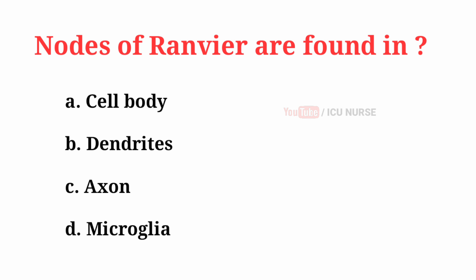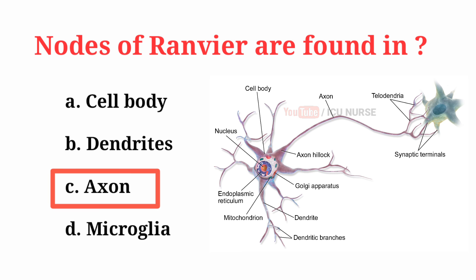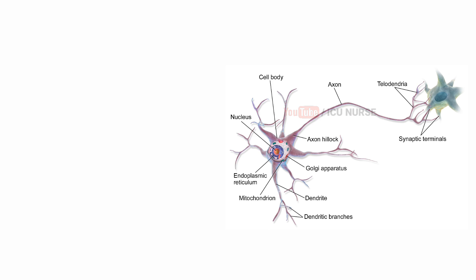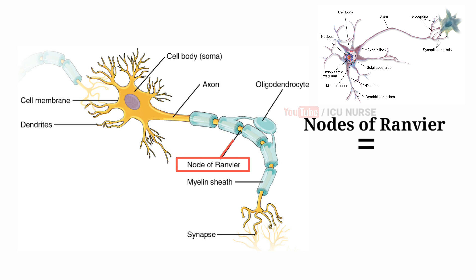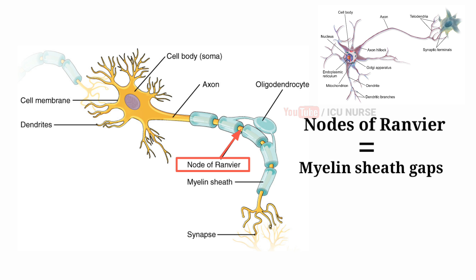Nodes of Ranvier are found in — the correct answer is C: Axon. Nodes of Ranvier are also known as myelin sheath gaps. Nodes of Ranvier help in the rapid conduction of nerve impulses.